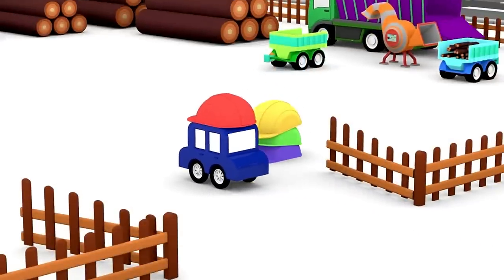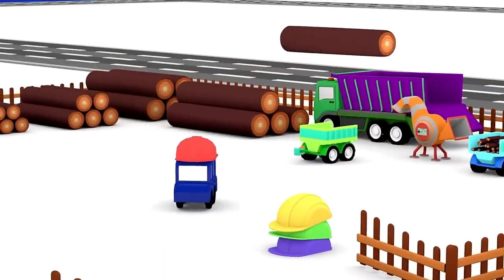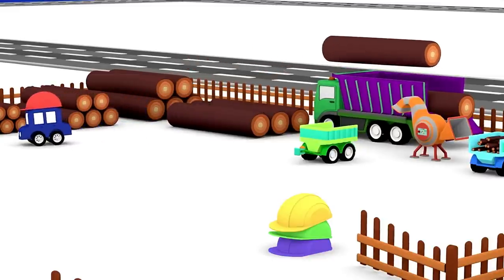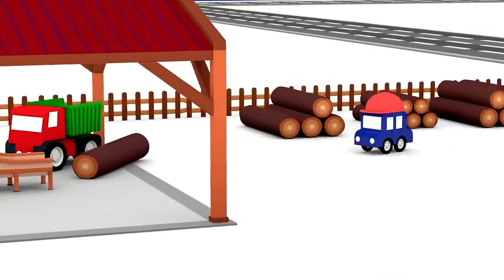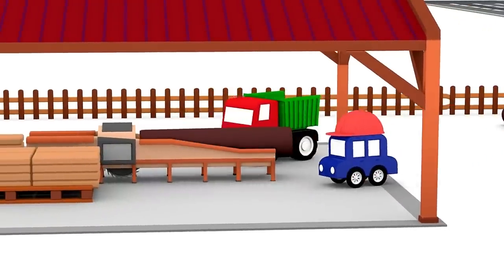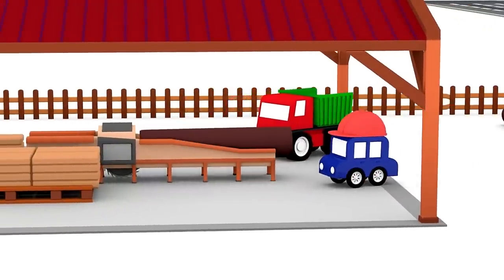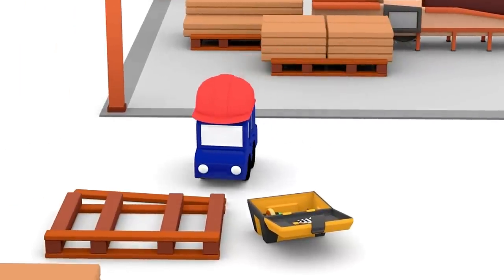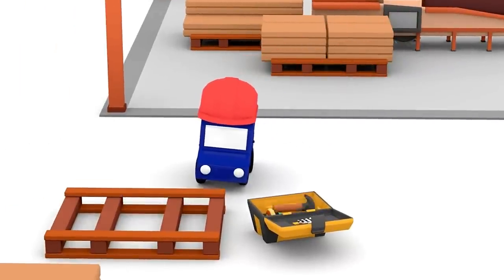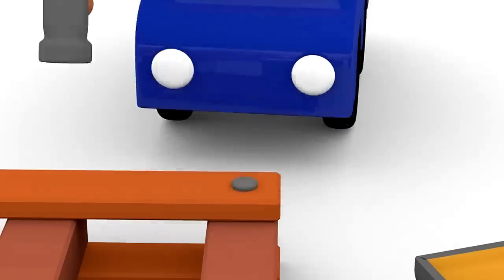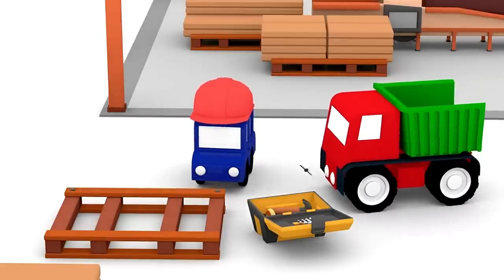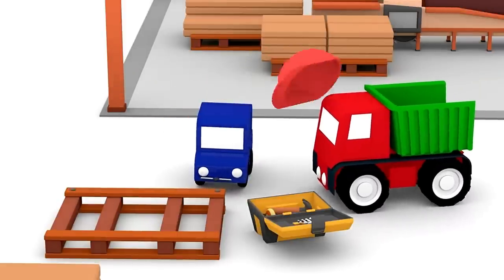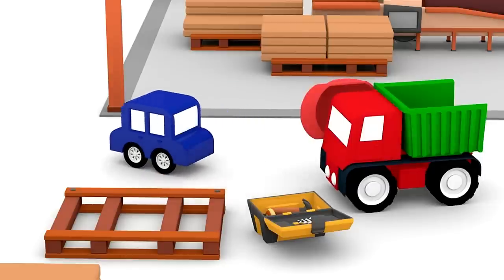The blue car has arrived at the sawmill. Huge logs are being cut here. Knock, knock. The car is hammering the nails. This is a blade. The lawn mower cuts grass with such a blade.